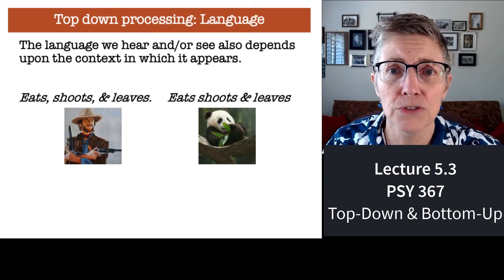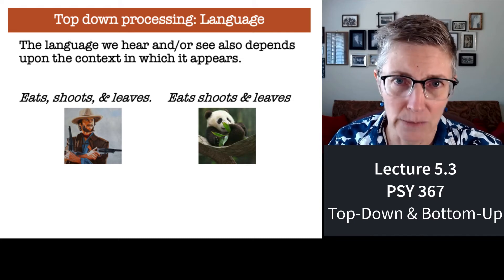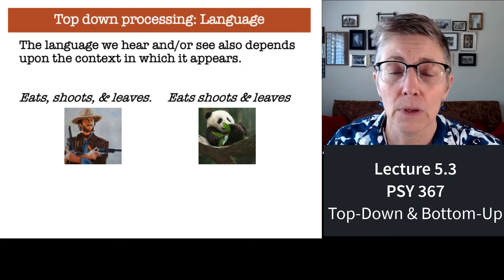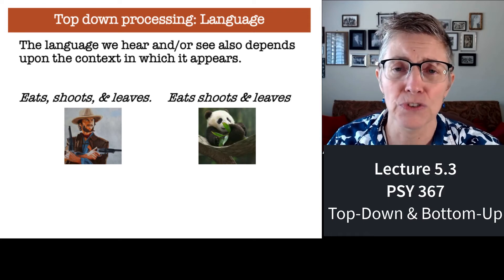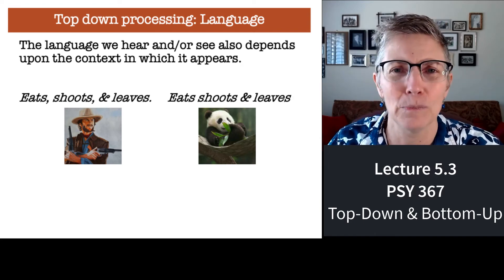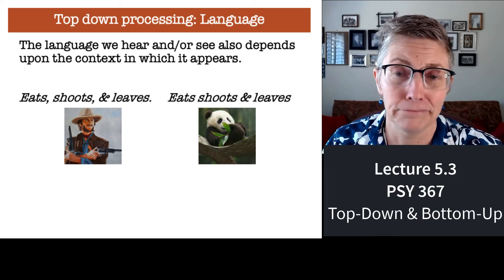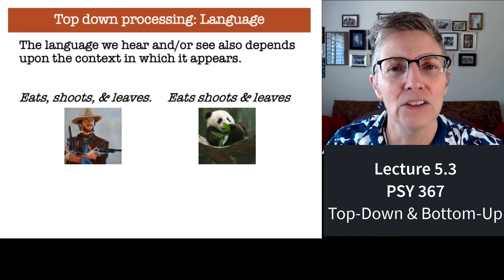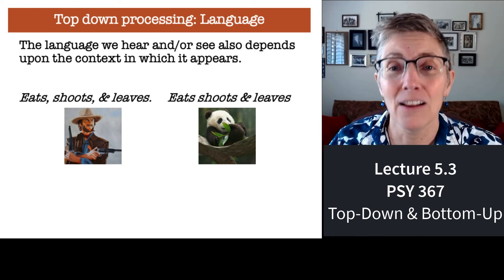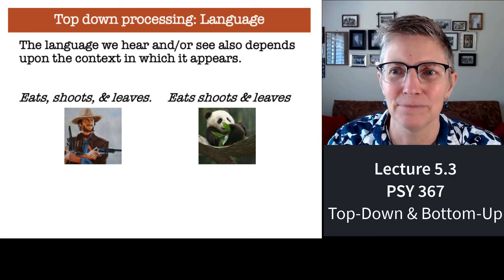Top-down processing is also used to understand language. If I say 'eats, shoots, and leaves,' there are two entirely different ways to interpret it. In the context of a cowboy — there's a cartoon of Clint Eastwood — you think he had a meal, shot somebody, and left. Next to that is a panda bear, and if I say 'eats, shoots, and leaves' about a panda, you think the panda eats shoots and leaves of bamboo — it's not shooting a gun, it's what he's eating. Context and top-down effects play a big role in our ability to understand language.